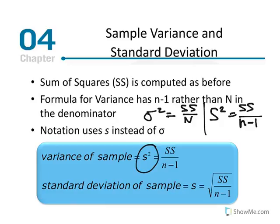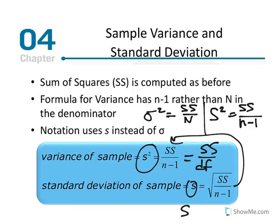The notation uses s² instead of the Greek letter sigma to denote variance of a sample. Sample variance equals SS over n minus 1, also written as SS over degrees of freedom (df). The standard deviation of the sample is denoted by s and equals the square root of SS over n minus 1 — which is the equation for variance — so s also equals the square root of variance.